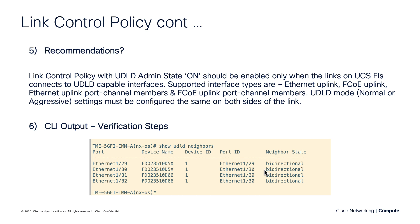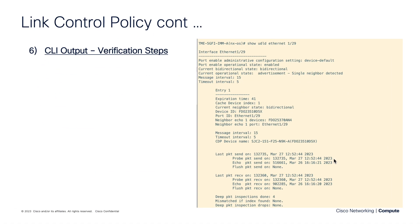For CLI verification, you can go into the Fabric Interconnect, Secure Shell into NXOS using 'connect nxos', and then run 'show udld neighbors'. Another verification step is to go into the FI NXOS menu and run 'show udld ethernet' followed by the specific port. You can also run this for the port channel, of course.